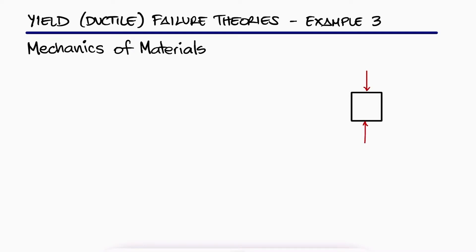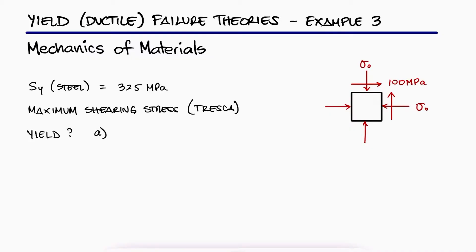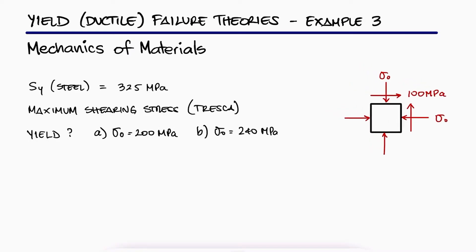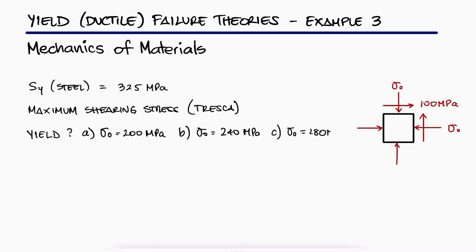The state of plane stress shown occurs in a machine component made of steel which has a yield strength of 325 MPa. Using the maximum shearing stress criterion, determine whether yield will occur when σ0 is 200 MPa, 240 MPa, or 280 MPa. If yield does not occur, determine the corresponding factor of safety.